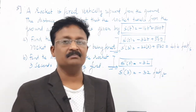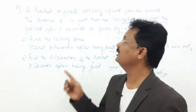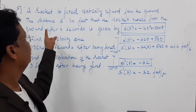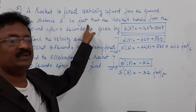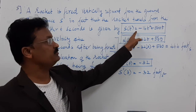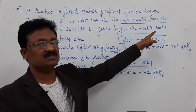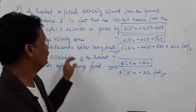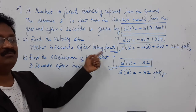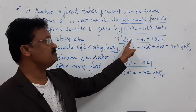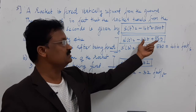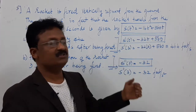Third example: a rocket is fired vertically upward from the ground. The distance s in feet that the rocket travels from the ground after t seconds is given by s(t) = −16t² + 560t. The question asks to find the velocity of the rocket 3 seconds after being fired.